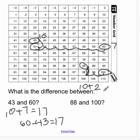88 and 100 are 12 spaces apart. The difference between the two numbers is 12.